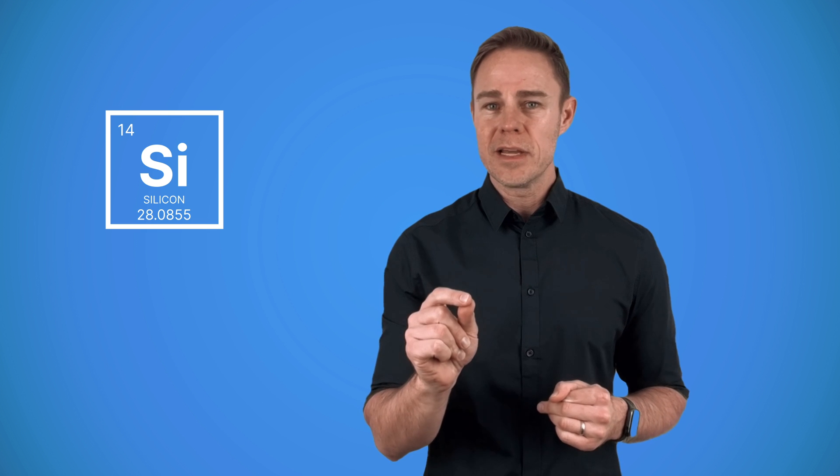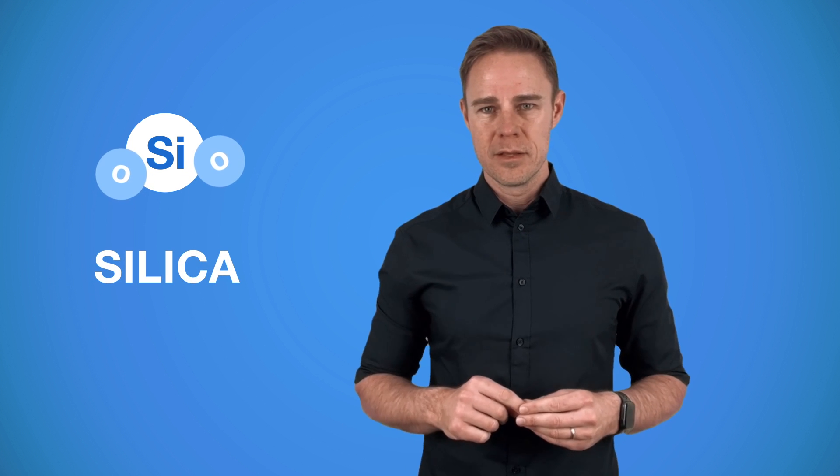Now let's return to those solar cells, the most important part of the panel. Silicon, which they are made of, is the second most abundant element on Earth after oxygen. However, it doesn't appear in a pure form naturally. Most commonly it occurs as its dioxide, also known as silica.